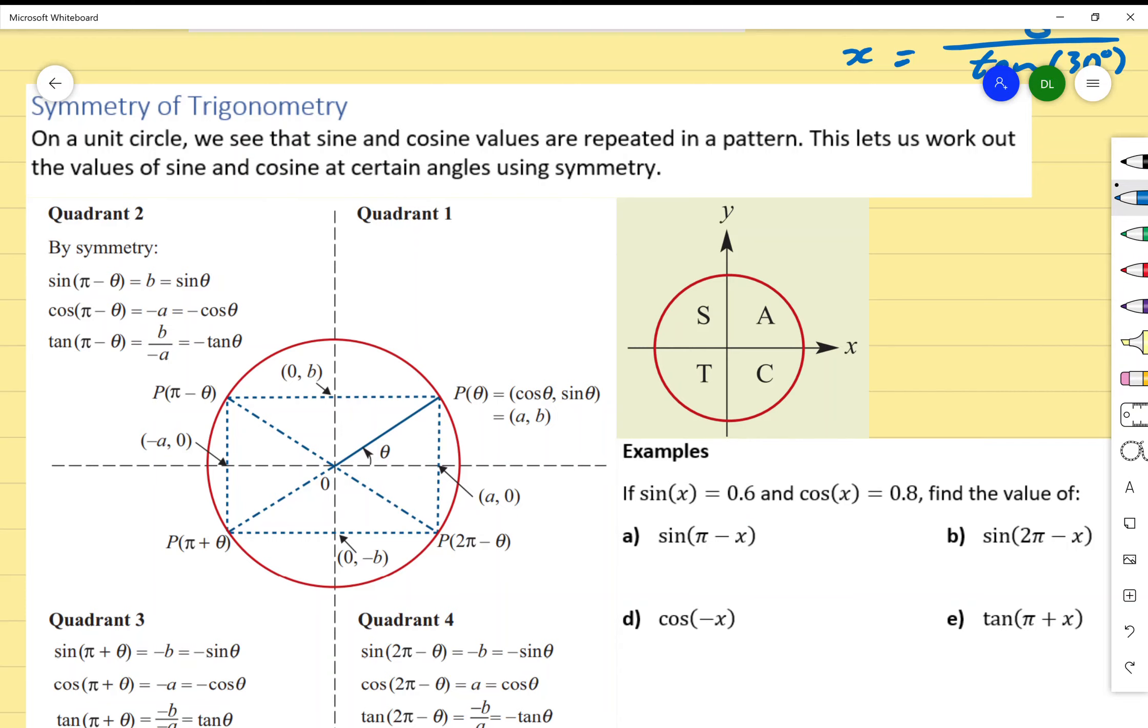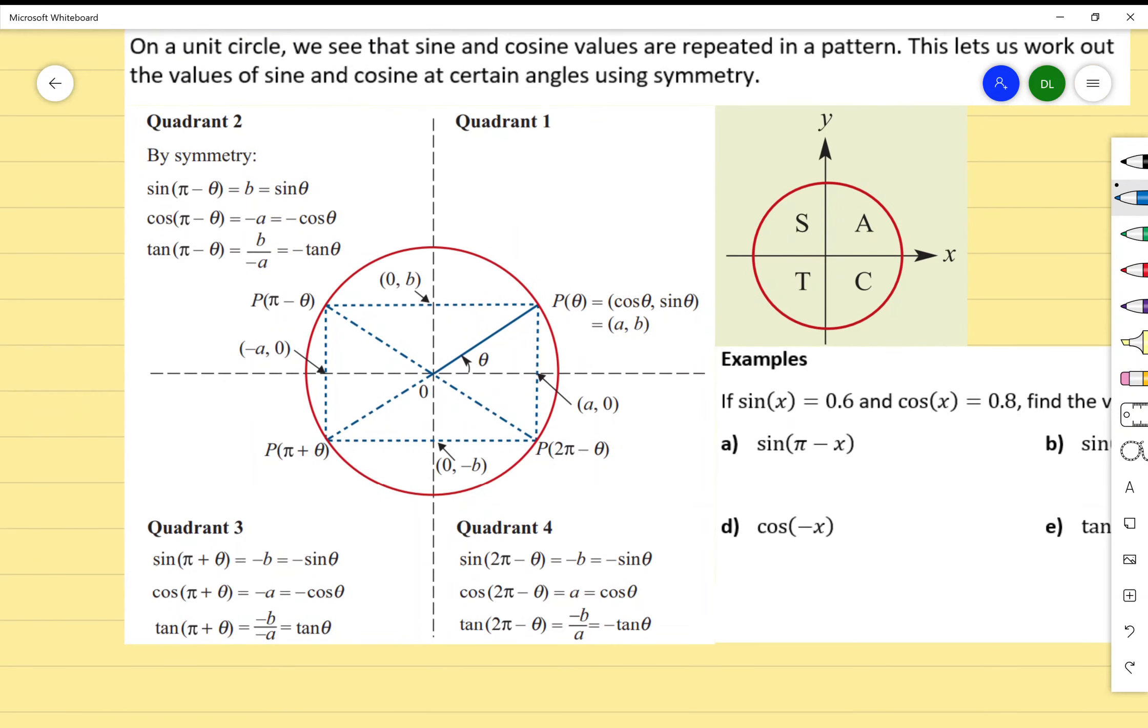Now with that in mind, I do need to introduce this really gross looking thing on the left-hand side. We've already split up into four quadrants. What we can do is use the unit circle and take advantage of the symmetrical properties in order to find the angles that are in other quadrants.